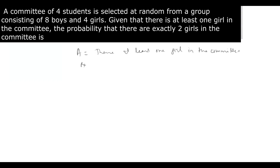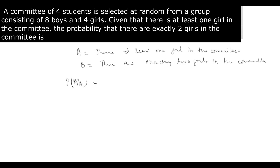Event B is that there are exactly two girls in the committee. They are asking us to find P(B given A), which equals P(B intersection A) divided by P(A).